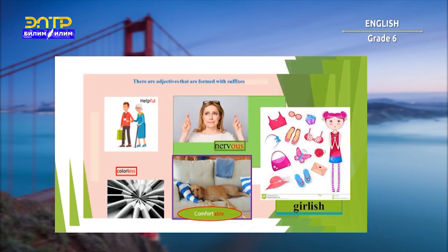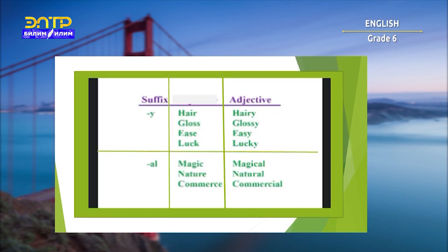Here we can see adjectives made from nouns or verbs: helpful, colorful, nervous, comfortable, and girlish. We are going to see how adjectives can be formed. We will see the formation of adjectives from nouns. Adding suffixes to a noun is the most common way to create an adjective. We can add the suffix -Y, -AL, or -IL to a noun to form an adjective.